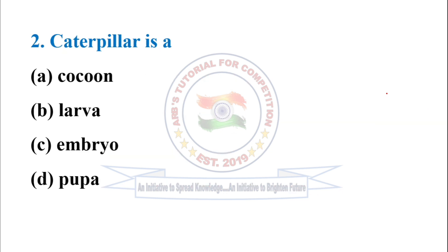Next question: caterpillar is a — option B — caterpillar is a larva.